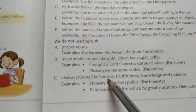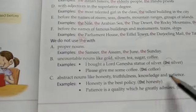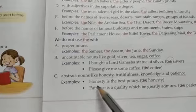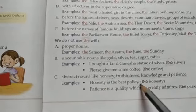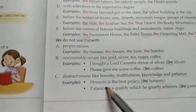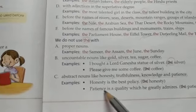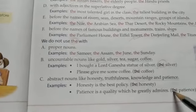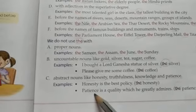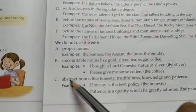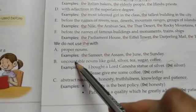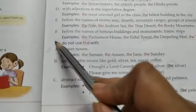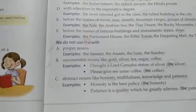Similarly, abstract nouns like honesty, truthfulness, knowledge, and patience — we cannot use 'the' with these abstract nouns either. For example: 'Honesty is the best policy' — we cannot use 'the honesty'. And 'Patience is a quality which he greatly admires' — 'the patience' would be wrong. So we cannot use 'the' with abstract nouns, uncountable nouns, or proper nouns — these are the things to keep in mind while using the article 'the'.